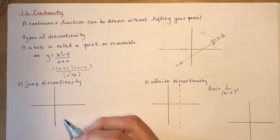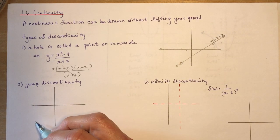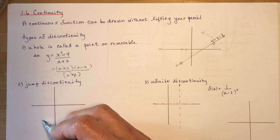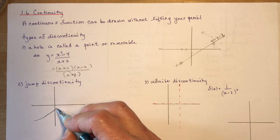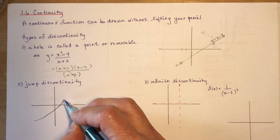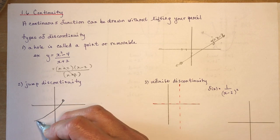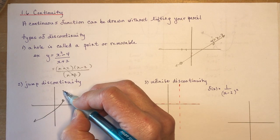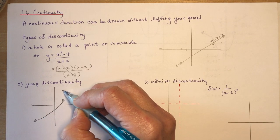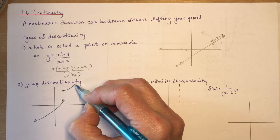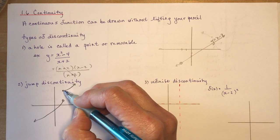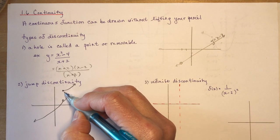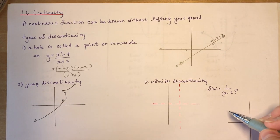A jump discontinuity is usually found in piecewise functions — you have something that goes up to a point and ends, and then maybe continues with a solid point up higher. So this would be a jump because you're jumping up there.